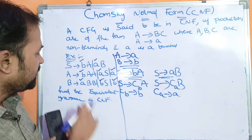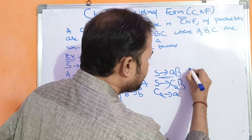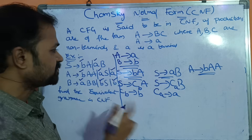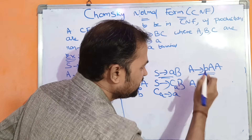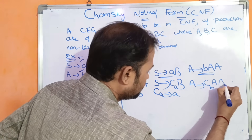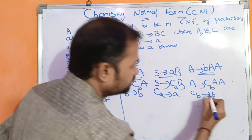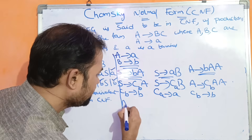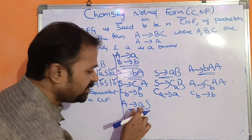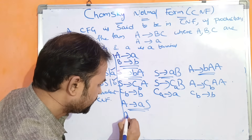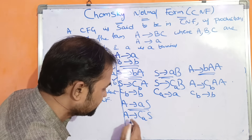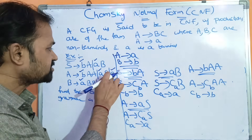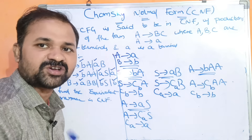Next, A implies BAA: replace the terminal B with CB, giving A implies CBAA, where CB implies B. Then A implies AS: replace the terminal A with CA, giving A implies CAS, where CA implies A. A implies A is already in Chomsky Normal Form — non-terminal produces terminal.